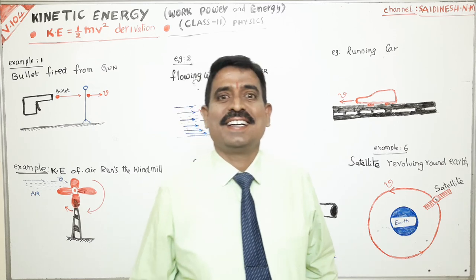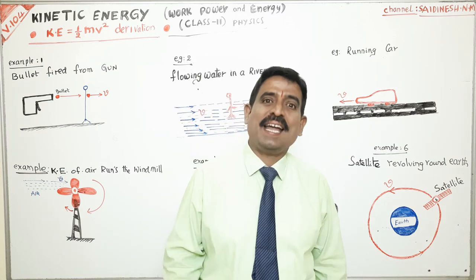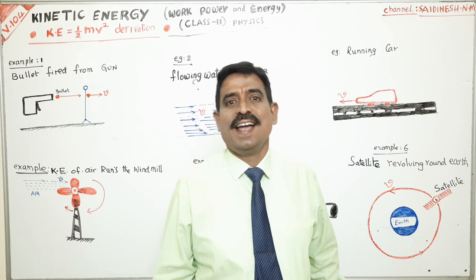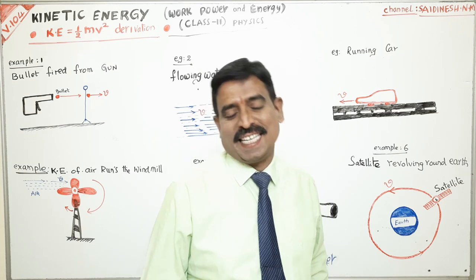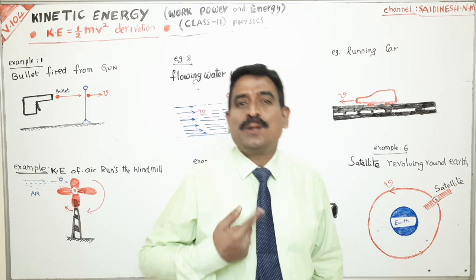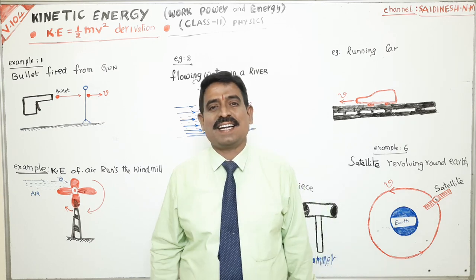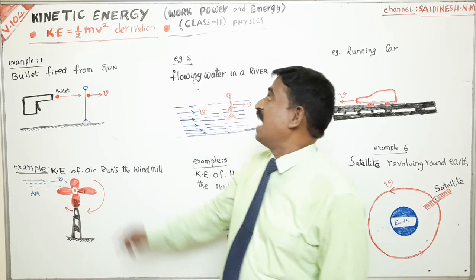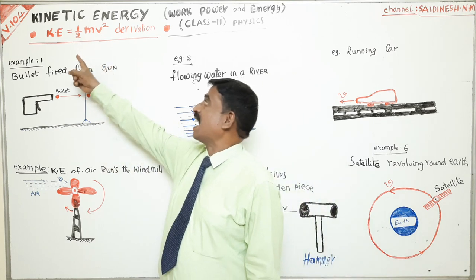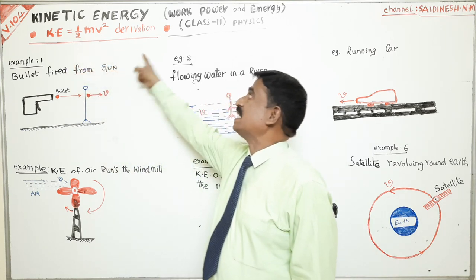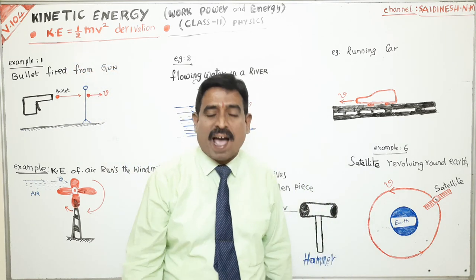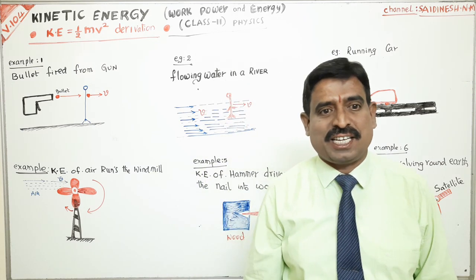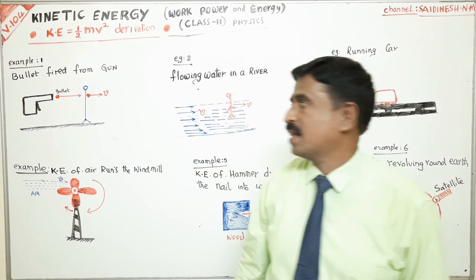Good morning, my name is M. Narasimha Rao, lecturer in physics. Today I am discussing what is kinetic energy, the kinetic energy derivation KE is equal to half mv squared, and examples of kinetic energy.